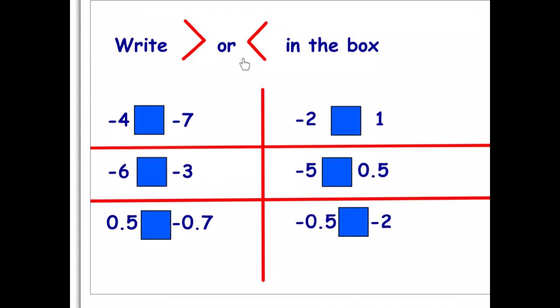Write greater than or less than in the box. A helpful tip: the big opening of the symbol goes to the big number and the little point goes to the little number. So the first one: minus four is greater than minus seven, because minus four is closer to zero and therefore bigger. Number two: negative six is less than negative three.